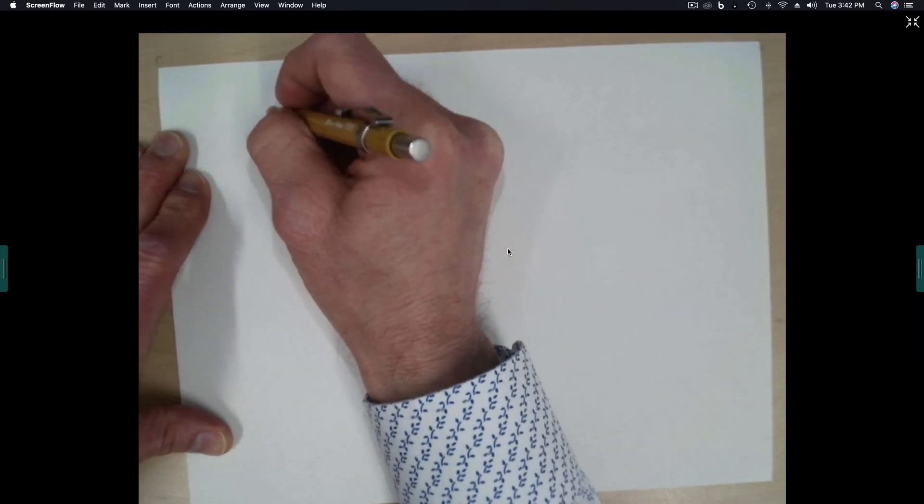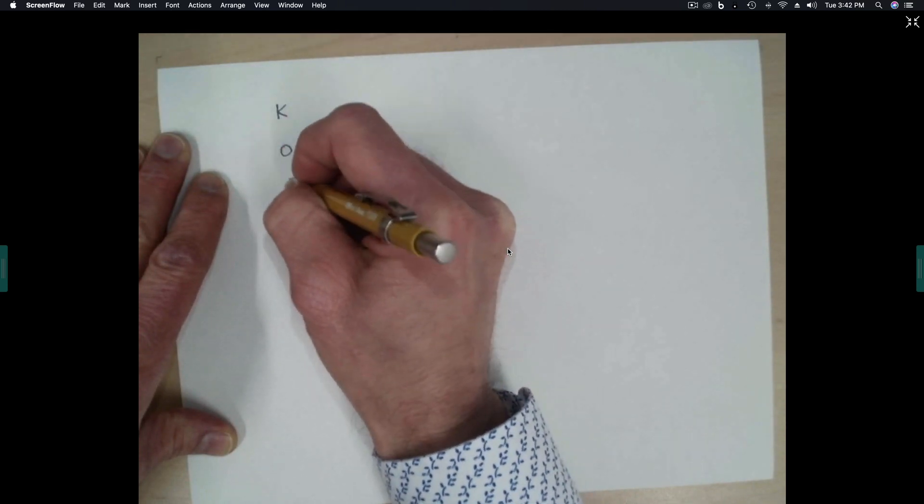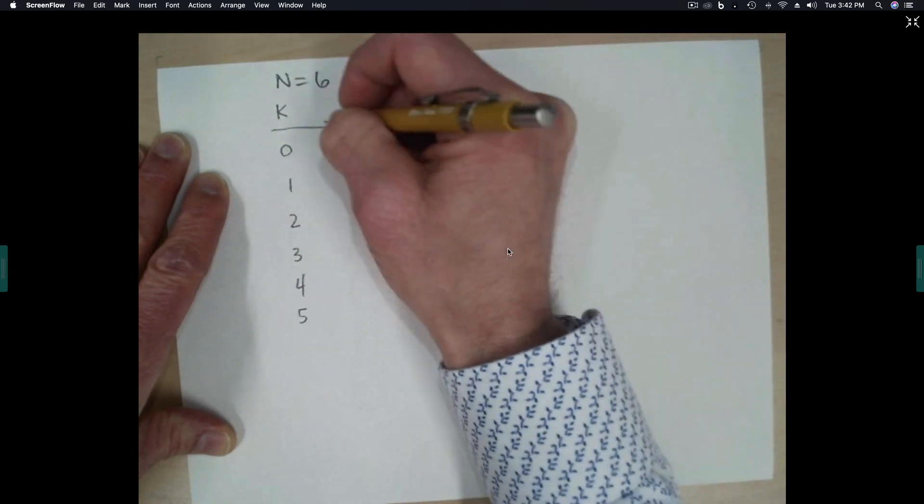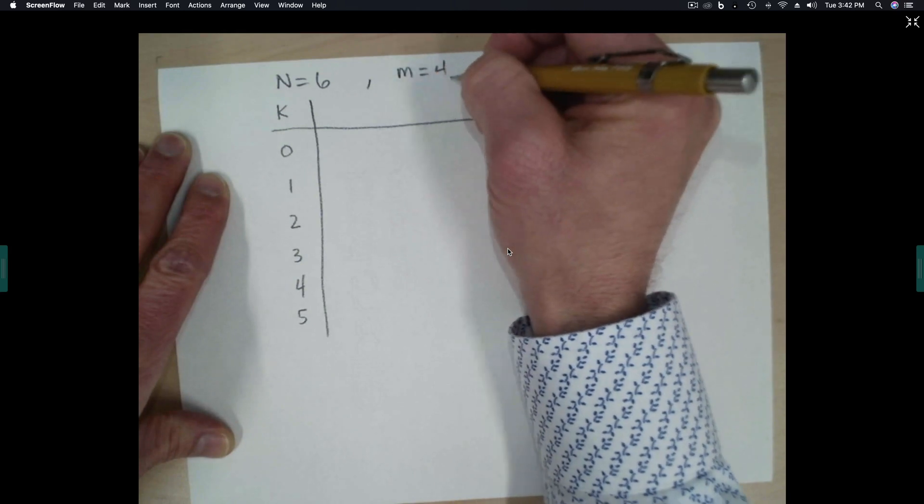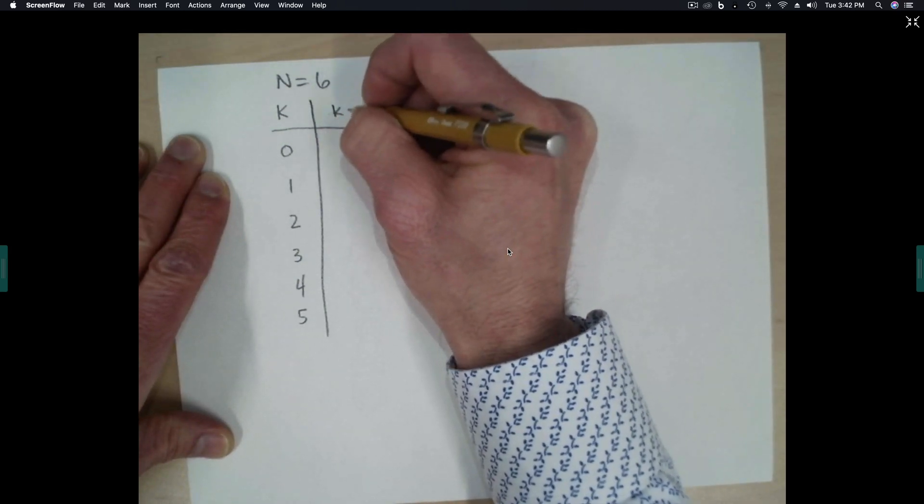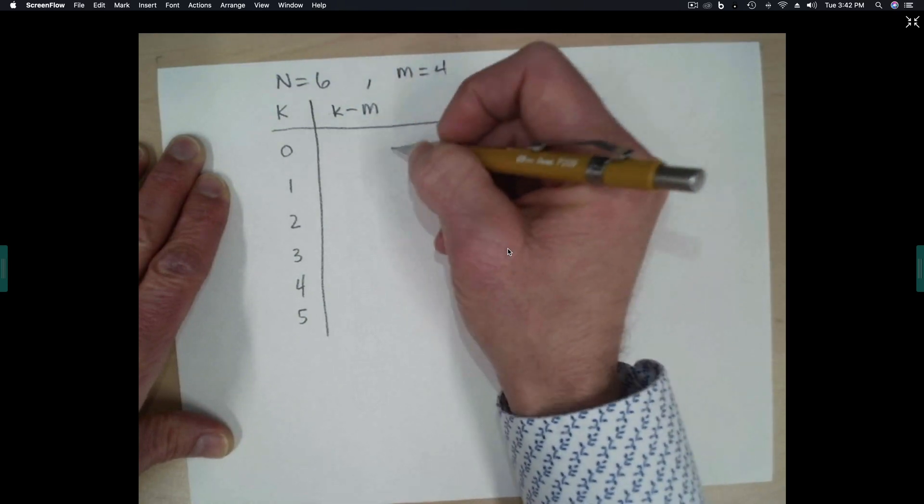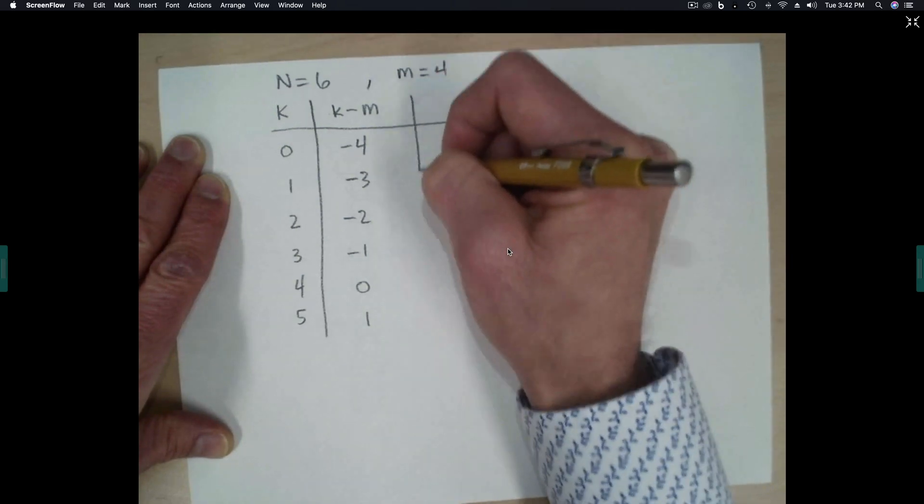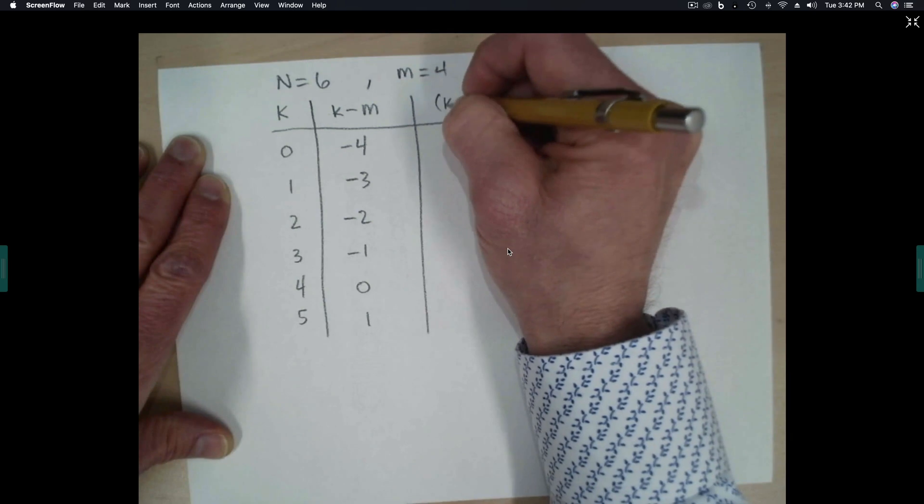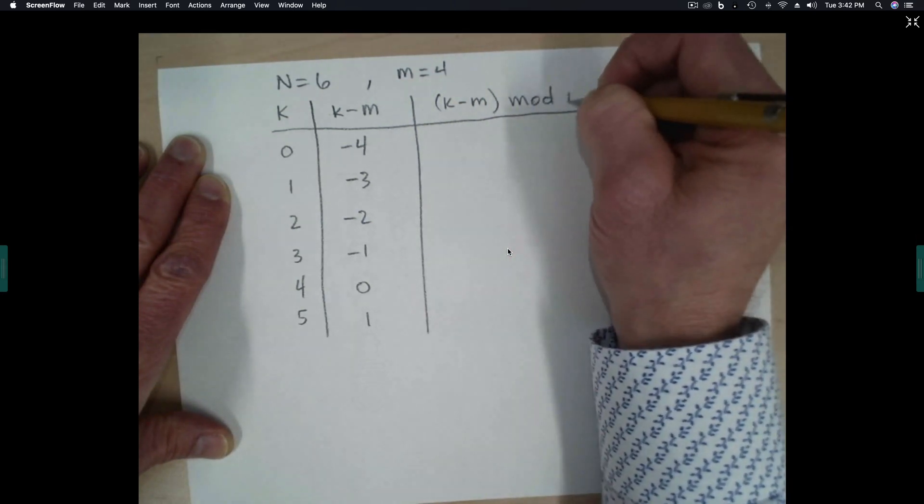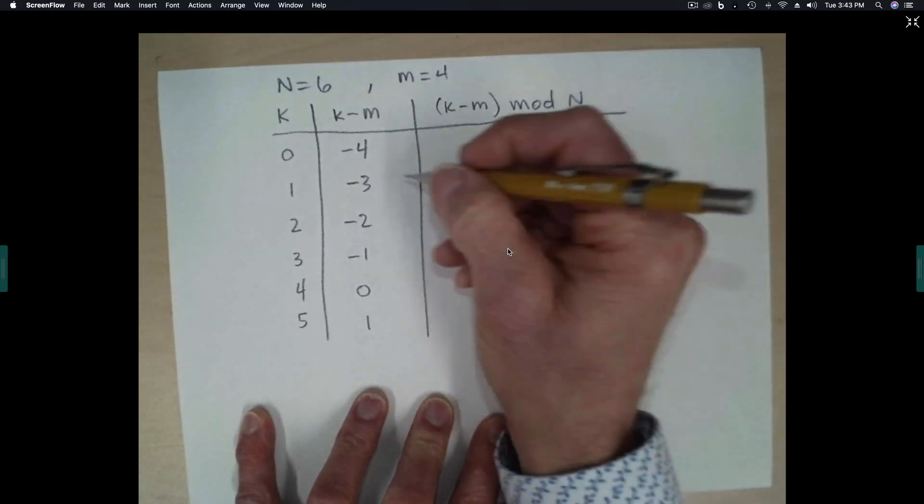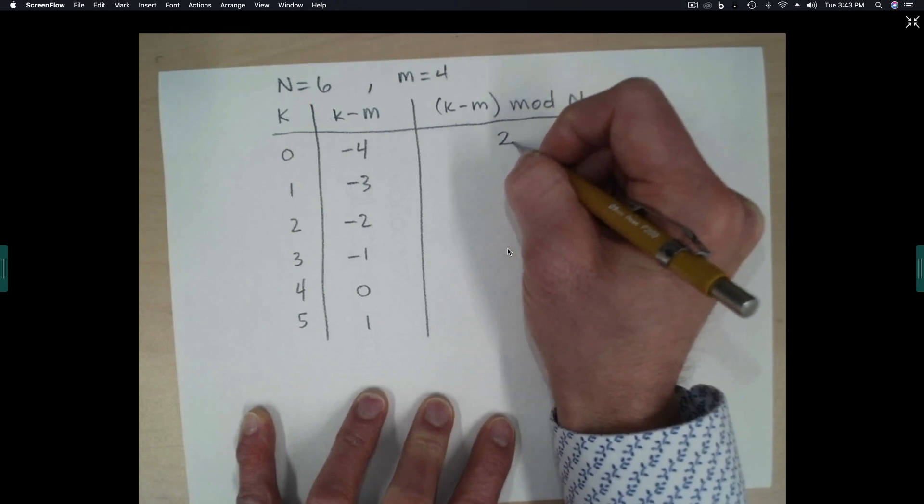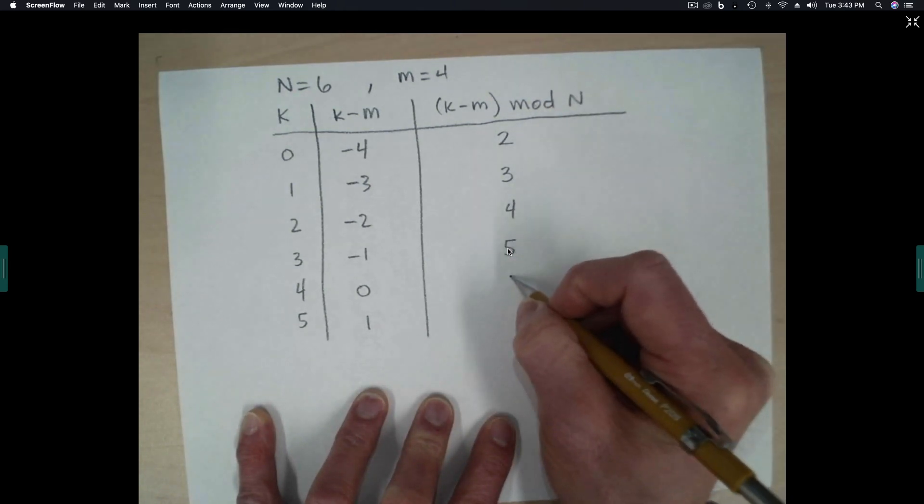So let's say, let's build a table for a particular case, k going from 0, 1, 2, 3, 4, 5. So we'll take the case where n is equal to 6. And let's also use m equal 4. So here we're going to have the table, the column k minus m. So this would be negative 4, negative 3, negative 2, negative 1, 0, 1. And now let's have another column in our table for k minus m modulo n. So we're going to take these numbers modulo 6. So again, to do a modulo, we just add 6 to the negative numbers, and then we're going to be okay in this case. So we'll have 2, 3, 4, 5, 0, 1.